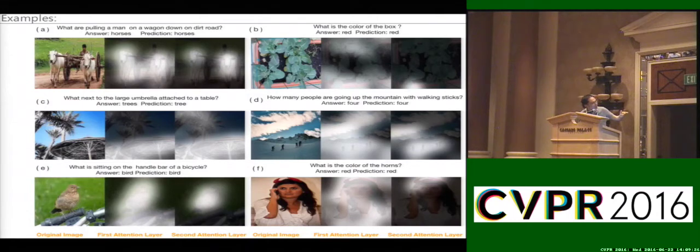This similar behavior happens in many other questions and many other images. Like the first one, 'what is pulling a man in a wagon', we first pay attention on all the major objects and ignore the background, and then in the second layer we focus on the animal we want to infer the answer for. Another example, 'how many people are going up in the mountain', at the first layer of the attention model we focus on the mountain and all the clouds in the background, and in the second layer we focus more on just a group of people.